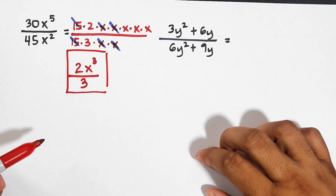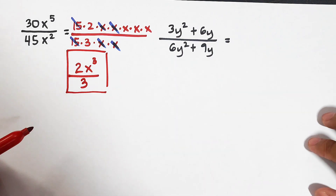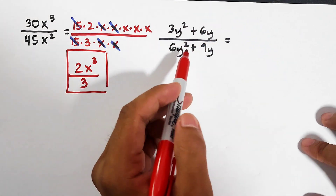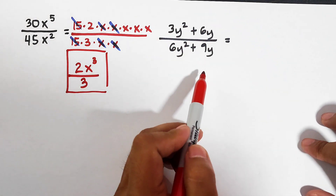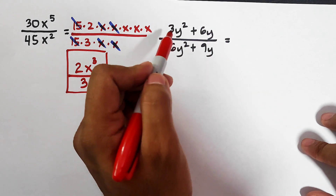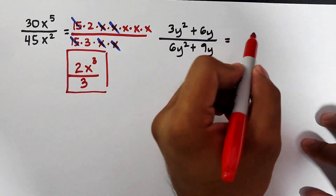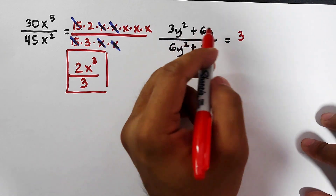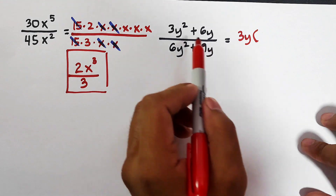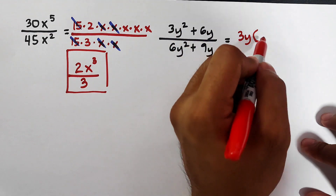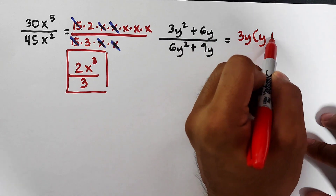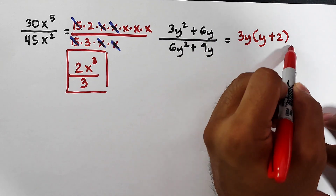Now let's move on to the second expression: 3y squared plus 6y over 6y squared plus 9y. We can use common monomial factoring. For the numerator, the common factor is 3y. Dividing 3y squared by 3y gives y, and 6y divided by 3y gives plus 2.